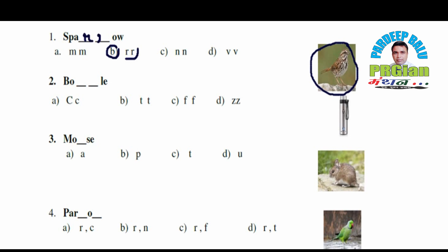Sparrow. Next, look at the next word: P O _ _ _ L E. What will it form? Yes — Bottle! So what is the right answer here? Option B: T T. B O double T L E — Bottle.